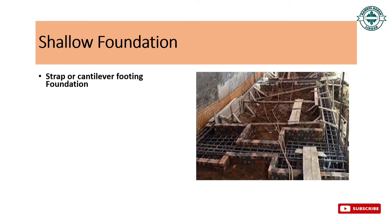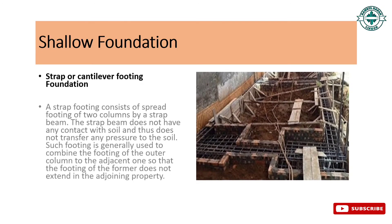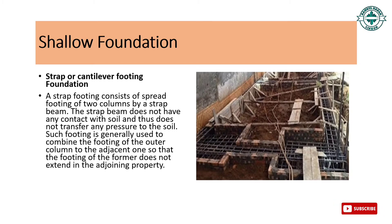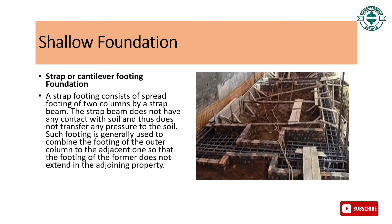Strap or cantilever footing foundation: a strap footing consists of spread footings of two columns connected by a strap beam. The strap beam does not have any contact with the soil and thus does not transfer any pressure to the soil. Such footing is generally used to combine the footing of the outer column with the adjacent one, so that the footing of the former does not extend into the adjoining property.